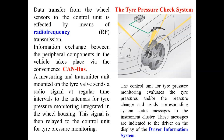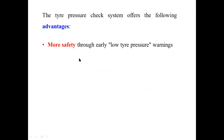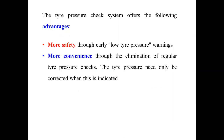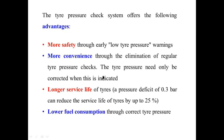The tire pressure check system offers several advantages. First, low tire pressure warnings allow appropriate action, achieving greater safety. Second, it provides more convenience by eliminating the need for regular manual pressure checks — the tire pressure only needs correction when a warning is indicated. Third, it increases the service life of tires; a pressure drop of 0.3 bar can reduce tire service life by up to 25%. Fourth, running the vehicle at correct tire pressure results in lower fuel consumption.